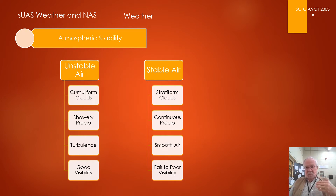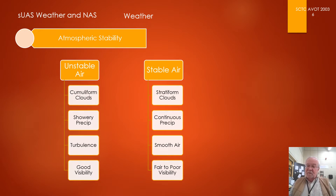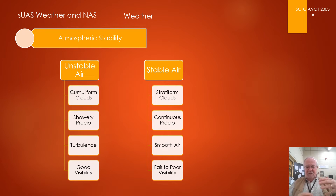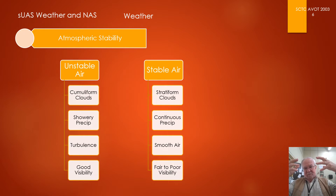In extreme cases, depending on how unstable the atmosphere is, the parcel will continue all the way up to the tropopause — that area where temperature no longer drops with altitude — and that's an extremely powerful thunderstorm at that point, with lots of updrafts. As this warm moist air rises, it cools, and once it reaches a certain temperature the air becomes saturated and turns into clouds, and eventually turns into rain.